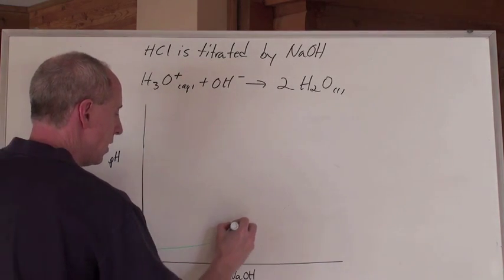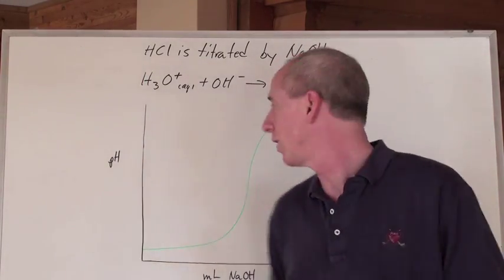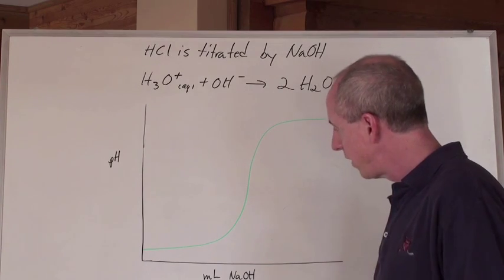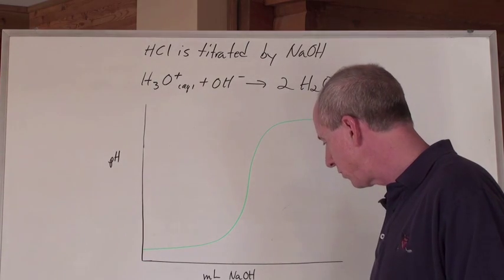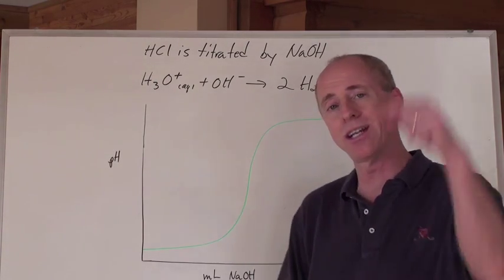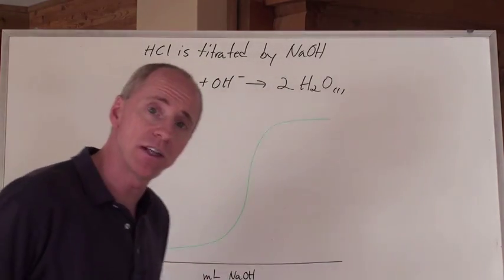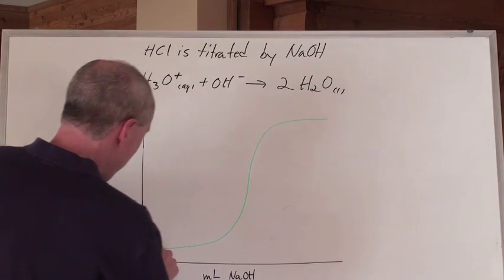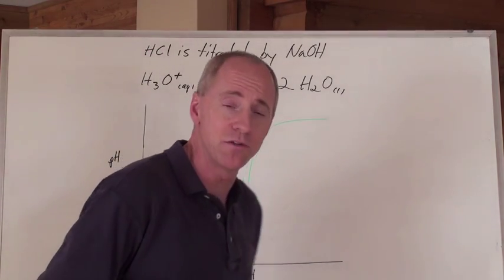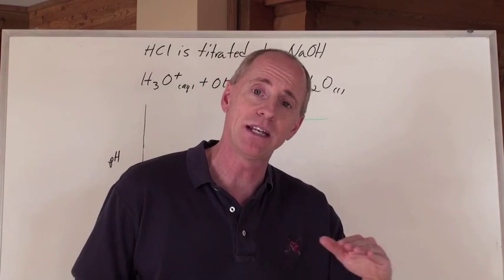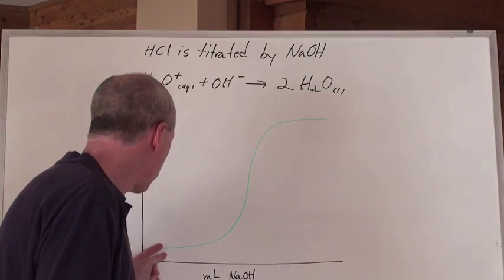We start with a low pH and then it changes gradually until it does that steep rise. That's a nice smooth type of line, and it represents what we call the titration curve for a strong acid, strong base titration where the base is being titrated into the acid. Very little change in pH occurs at the very beginning of a titration because it's a logarithmic scale and there's not a lot of concentration change.